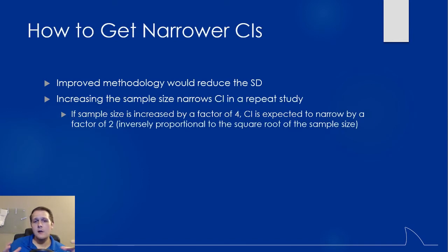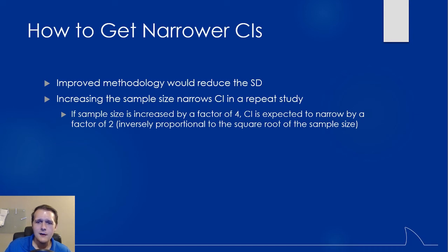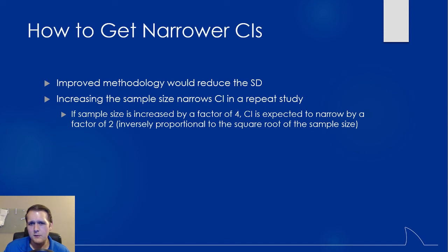To get more narrow confidence intervals, you can try to improve your methodology to get less variation in the data. The other thing you can do is increase the sample size — by increasing sample size you get a smaller standard error of the mean and thus smaller confidence intervals. If you increase the sample size by a factor of 4, the confidence interval should narrow by a factor of 2.